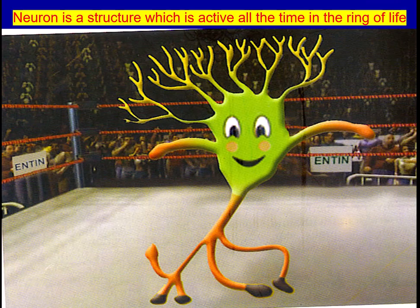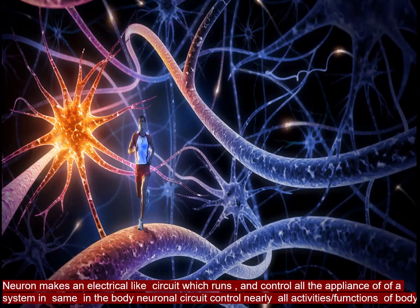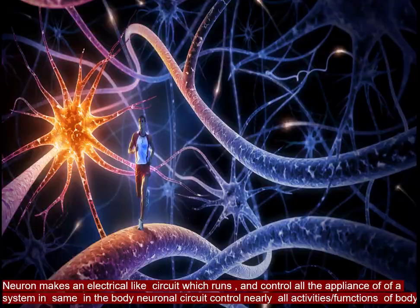The neuron is a structure which is active all the time in the range of life. Neurons make an electrical-like circuit which runs and controls all the systems of the body in the same way. The neuronal circuit controls nearly all activity and functions of the body.